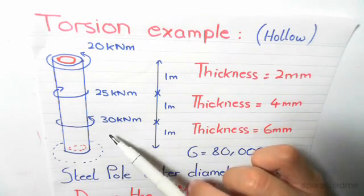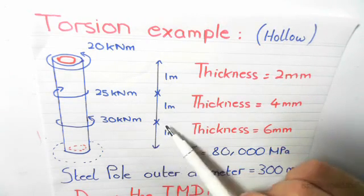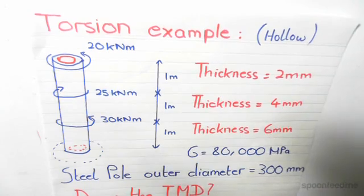The bottom section has a 30kNm anti-clockwise moment, also has a length of 1m and a thickness of 6mm.